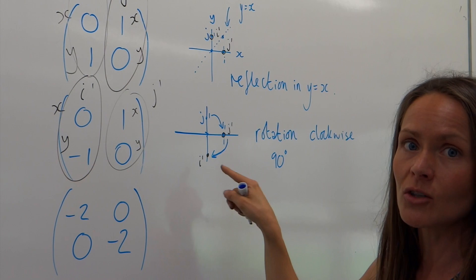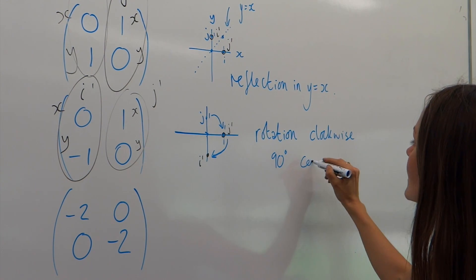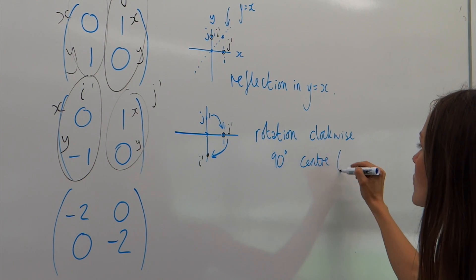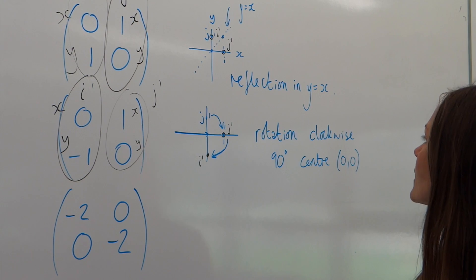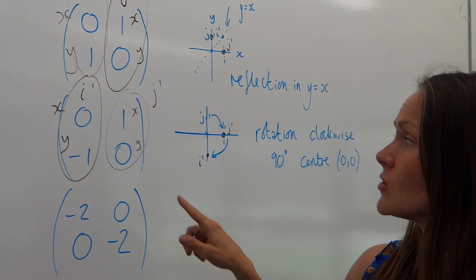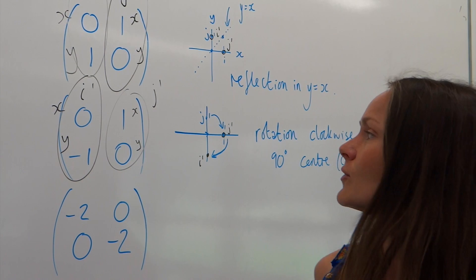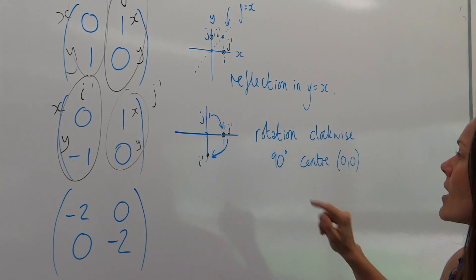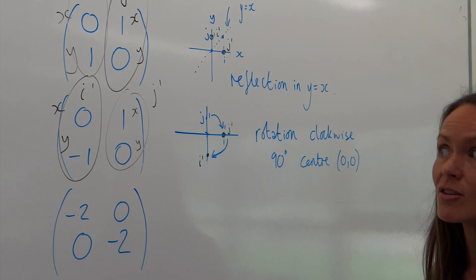And the centre point of the rotation is the origin. It's turned around that centre origin point. So, you also need to write centre origin or centre zero, zero. They're the same thing. So, you have to give all of that information. If you're asked to describe the transformation for this matrix: Rotation, clockwise, 90 degrees, centre zero, zero.